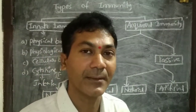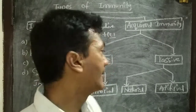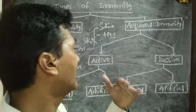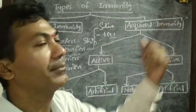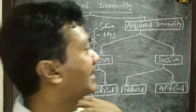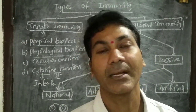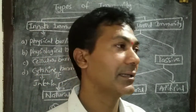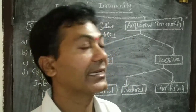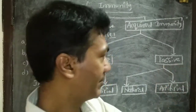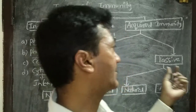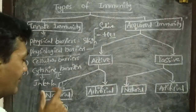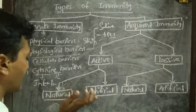Once the organism gets disease resistance power, the power continues for a lifetime — that is active acquired immunity. Sometimes we get immunity for some time only; after the pathogen is eliminated and the disease is healed, a second immunological response must be developed the next time — that is passive acquired immunity. Active acquired immunity is divided into two types: natural and artificial.